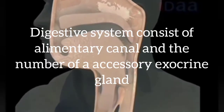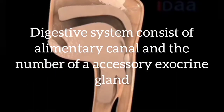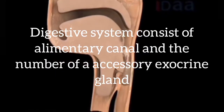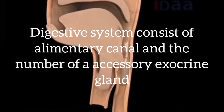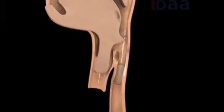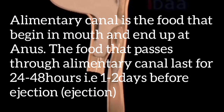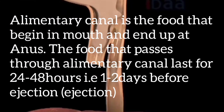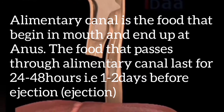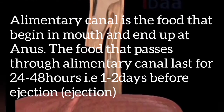The digestive system consists of the alimentary canal and a number of accessory exocrine glands. The alimentary canal is the food canal that begins in the mouth and ends at the anus.